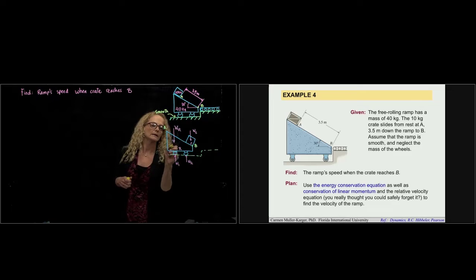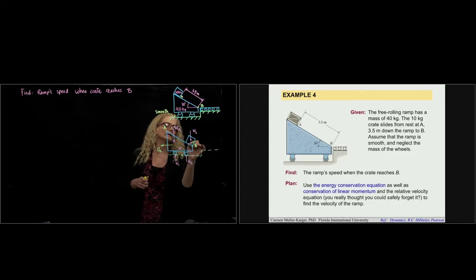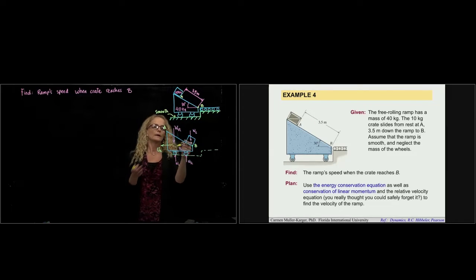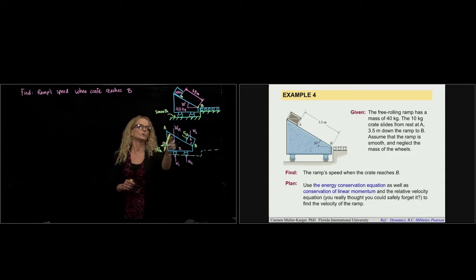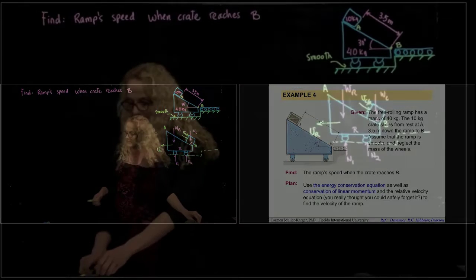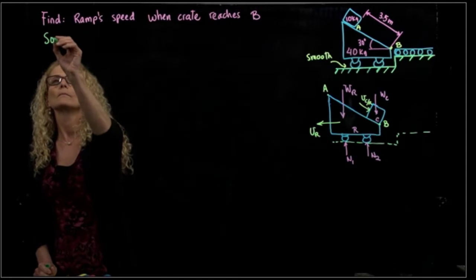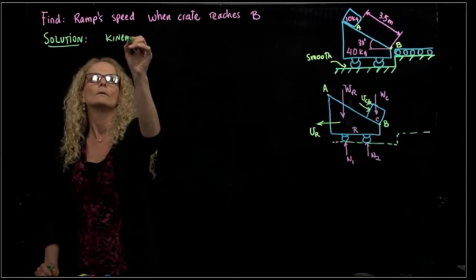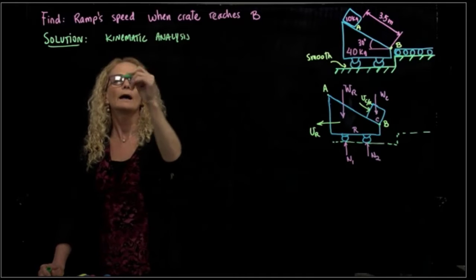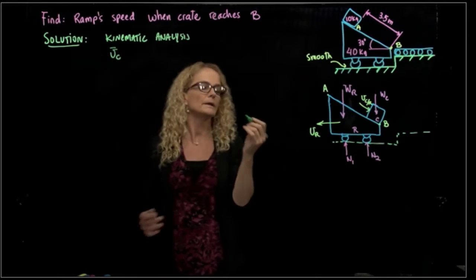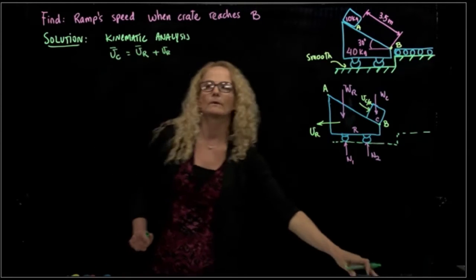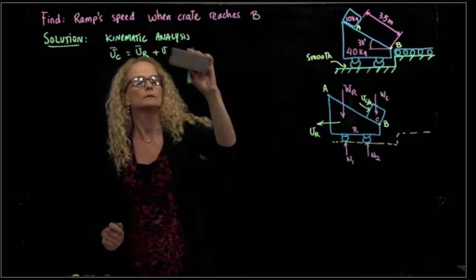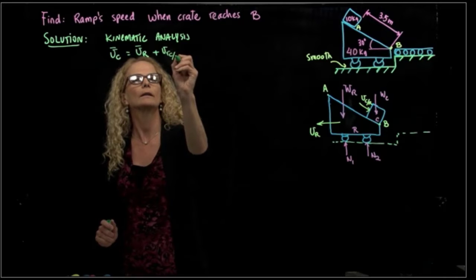The velocity of the ramp is going in this direction, and the velocity of the crate will include the velocity of the ramp, plus a relative velocity of the crate with respect to the ramp, which will be in that direction. So if I do the kinematic analysis, I know that the velocity of C as a vector will be the velocity of the ramp plus the relative velocity between the crate and the ramp.